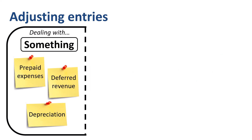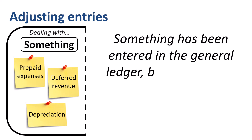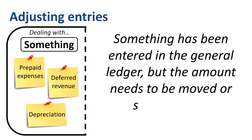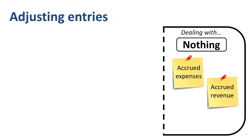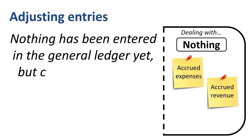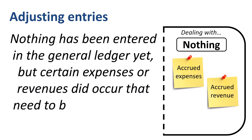Prepaid expenses, deferred revenue, and depreciation are adjusting journal entries dealing with something — something has been entered in the general ledger but the amount needs to be moved or split between accounting periods. We now move from something to nothing. The two types of adjusting journal entries in this category are accrued expenses and accrued revenue. We are looking for cases where nothing has been recorded yet, but certain expenses or revenues did occur that need to be accounted for in the current period.